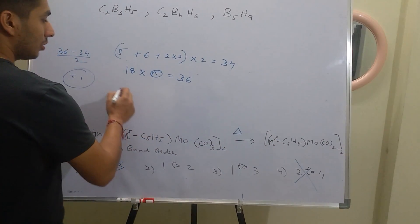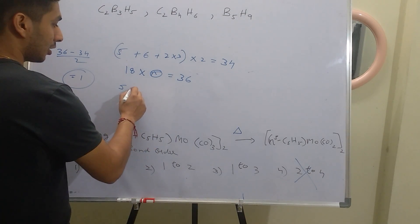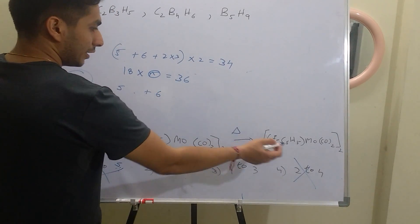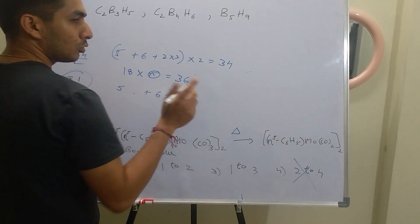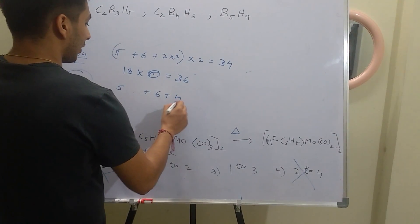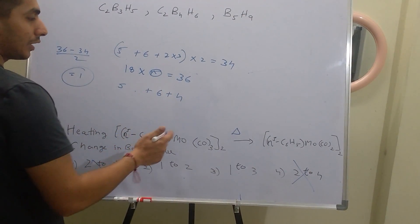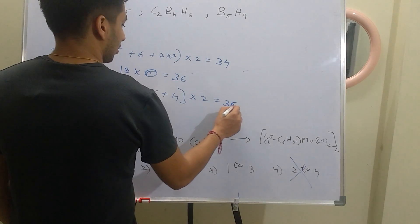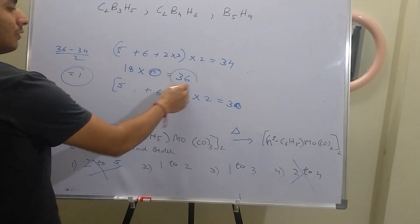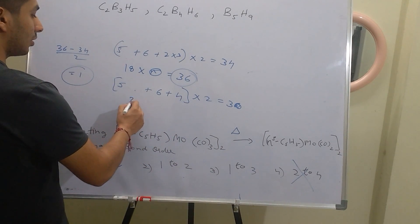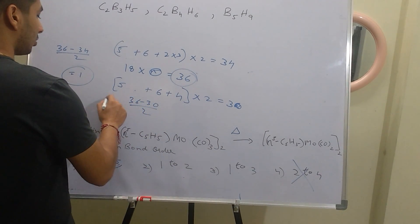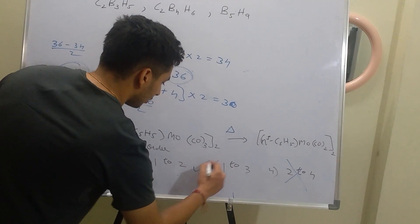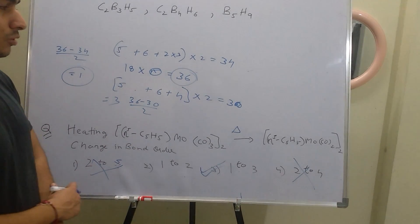For the heated compound [η5-C5H5-Mo(CO)2]2: η5-C5H5 gives 5 electrons, Mo gives 6 electrons, and 2 CO × 2 = 4 electrons, giving 5 + 6 + 4 = 15 per unit. As a dimer: 15 × 2 = 30 electrons. So (36 − 30) / 2 = 3. The bond order changes from 1 to 3, so the correct option is 1→3. Both questions were four markers and quite straightforward.